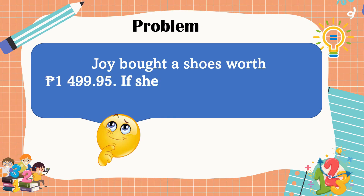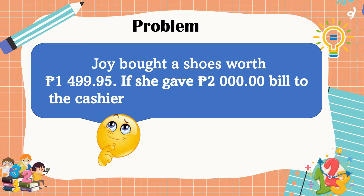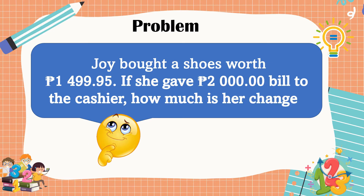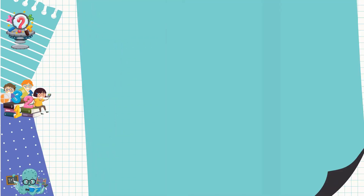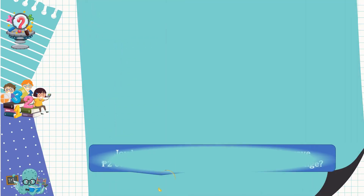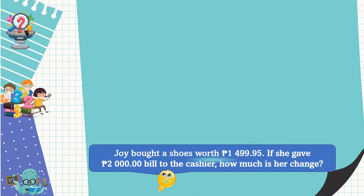This is our first problem: Joy bought a pair of shoes worth 1,499 pesos and 95 centavos. If she gave a 2,000 peso bill to the cashier, how much is her change? This first problem is a routine problem, so we're going to use the four-step plan.